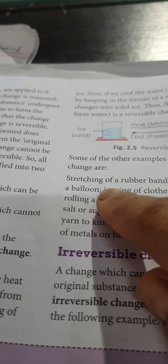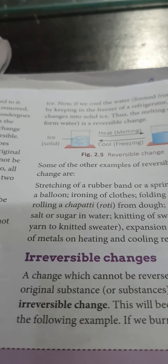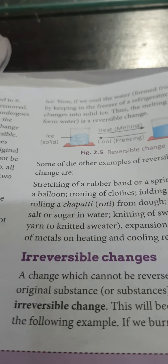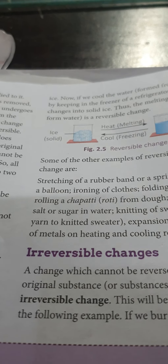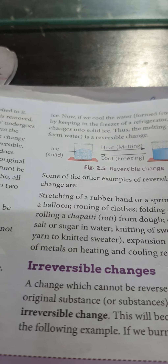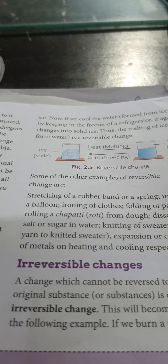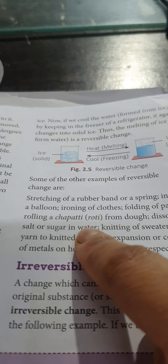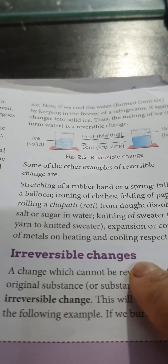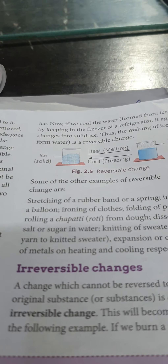Regarding rolling a chapati from dough: dough is the flour your mother uses to prepare chapati. That dough is rolled into a chapati, and if the chapati hasn't been shaped correctly and hasn't been cooked yet, your mother can roll it back into dough again. But if the chapati has been cooked, it cannot be reversed back into dough — that is an irreversible change. So rolling chapati from dough falls in both categories: reversible before cooking, and irreversible after cooking.